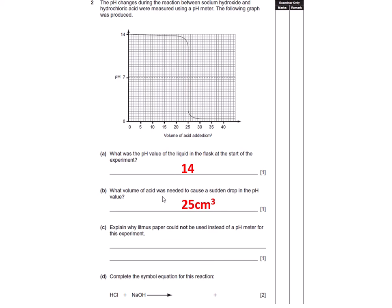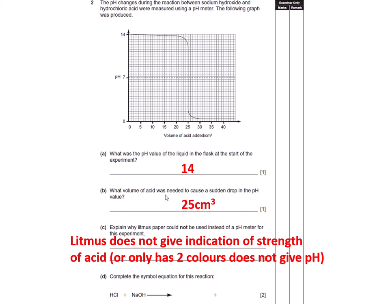Why litmus paper can't be used? Well litmus only gives us two colors, gives us acid and alkaline, doesn't give us a strength, doesn't give us a pH. So you've got to get that across nice and clearly. It's only got two colors, it doesn't give us a pH number.